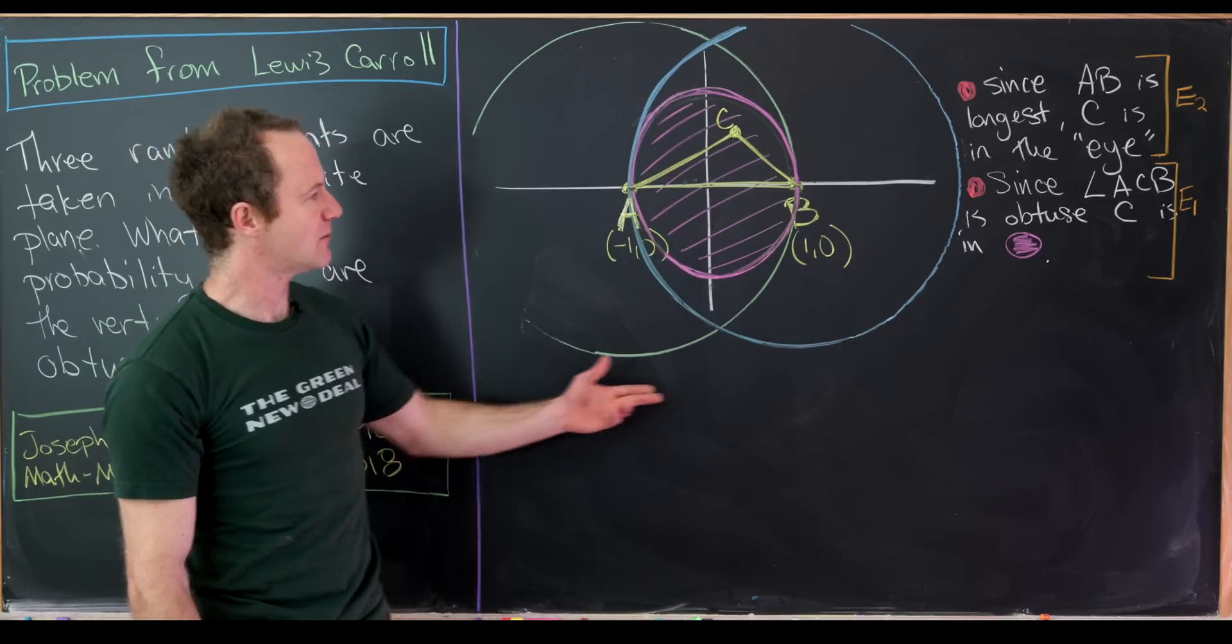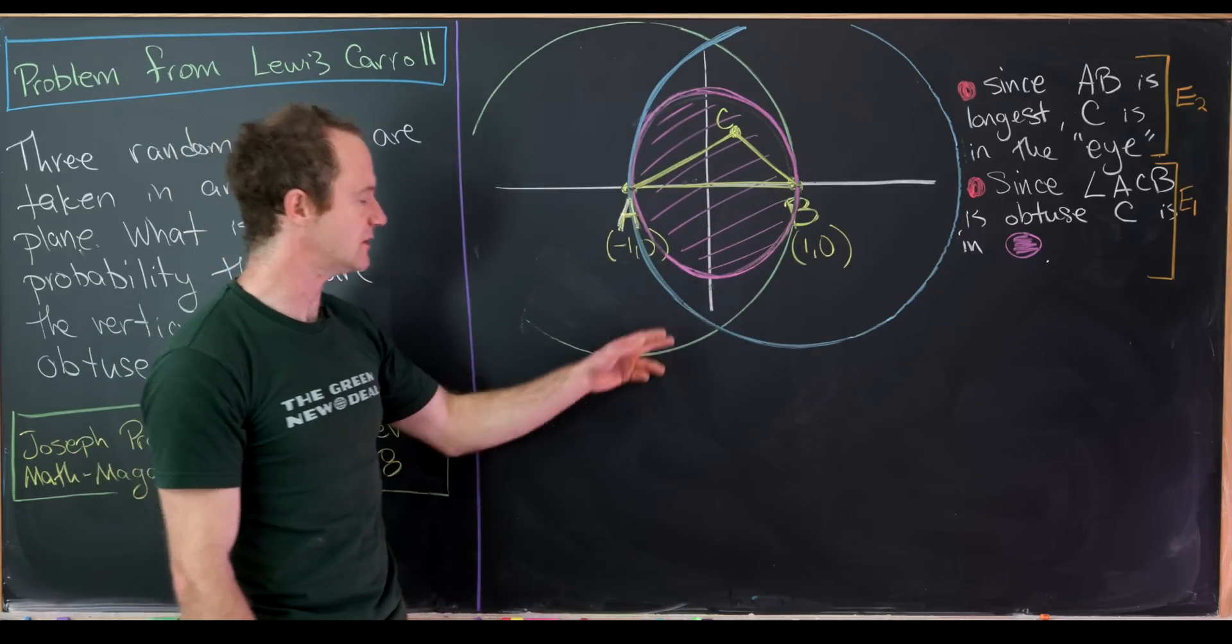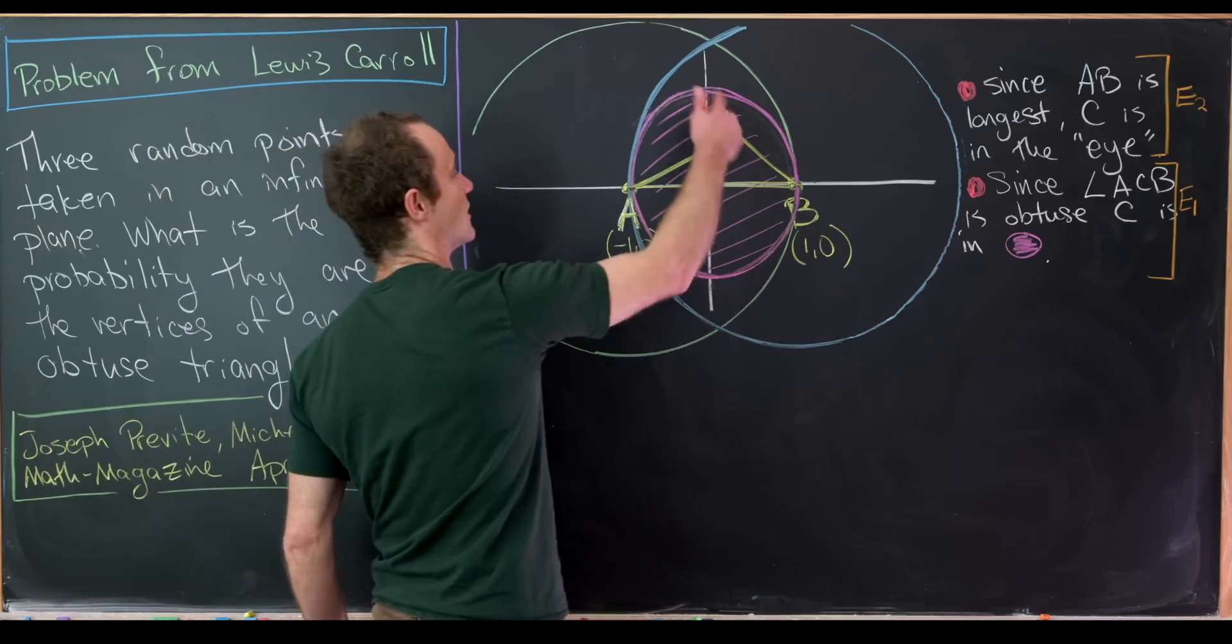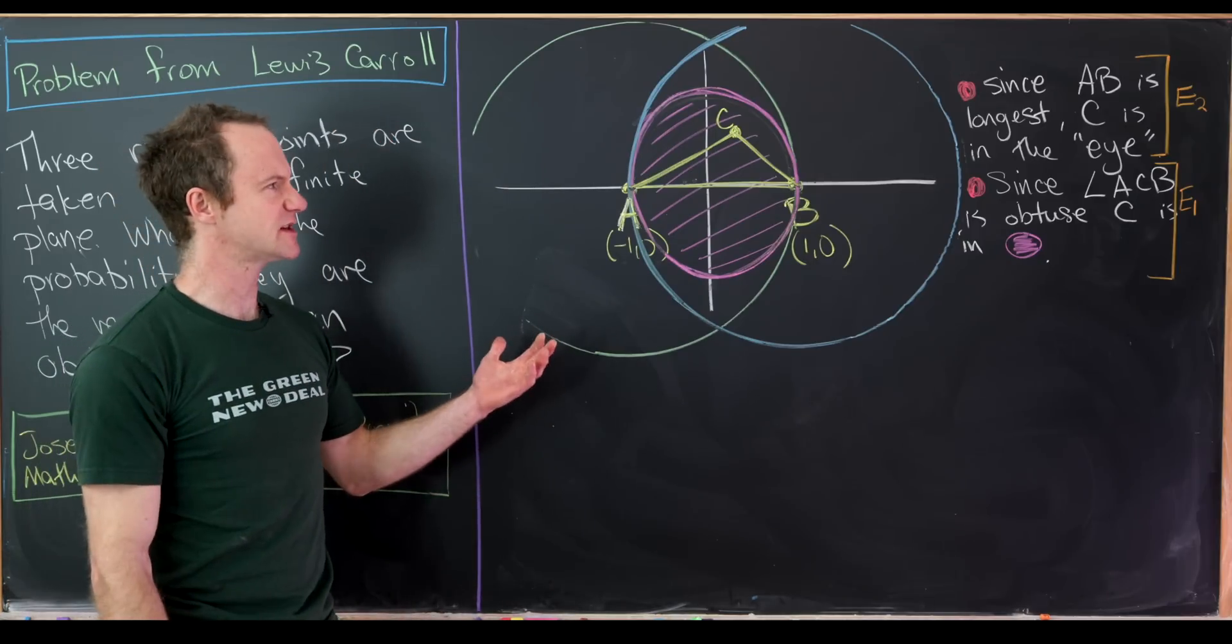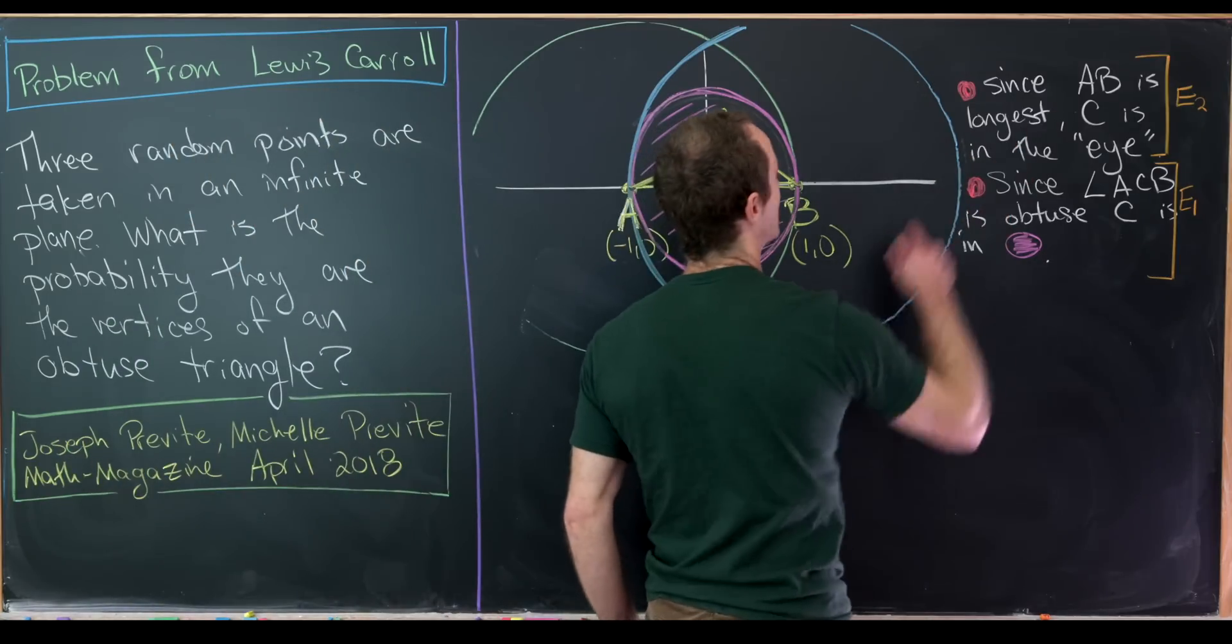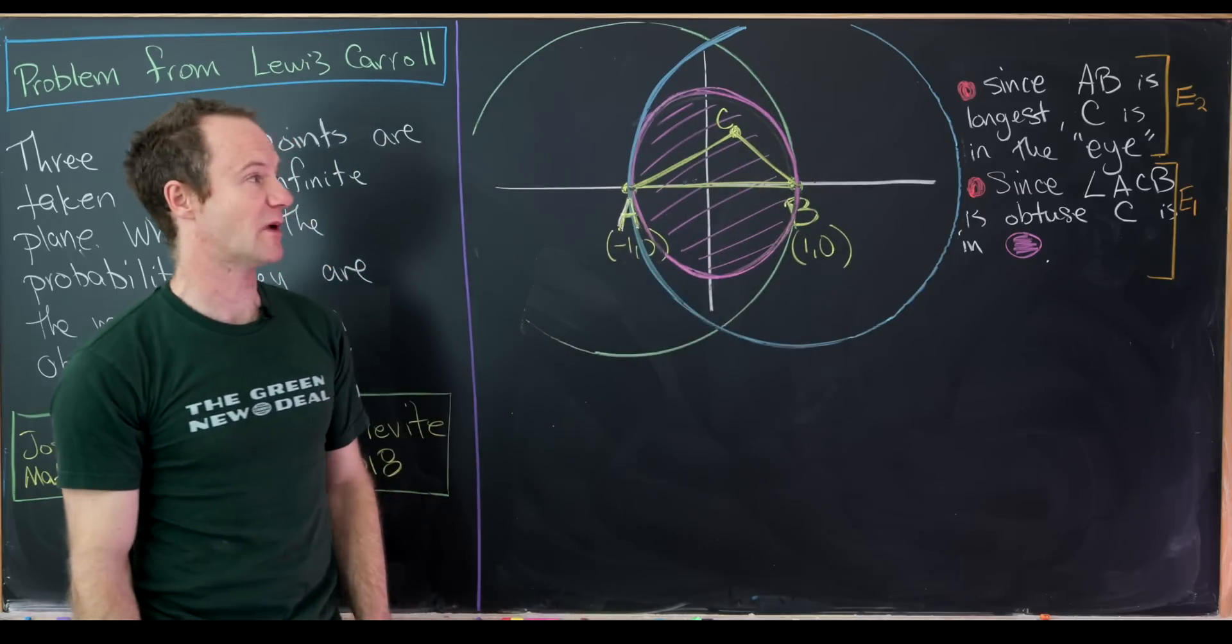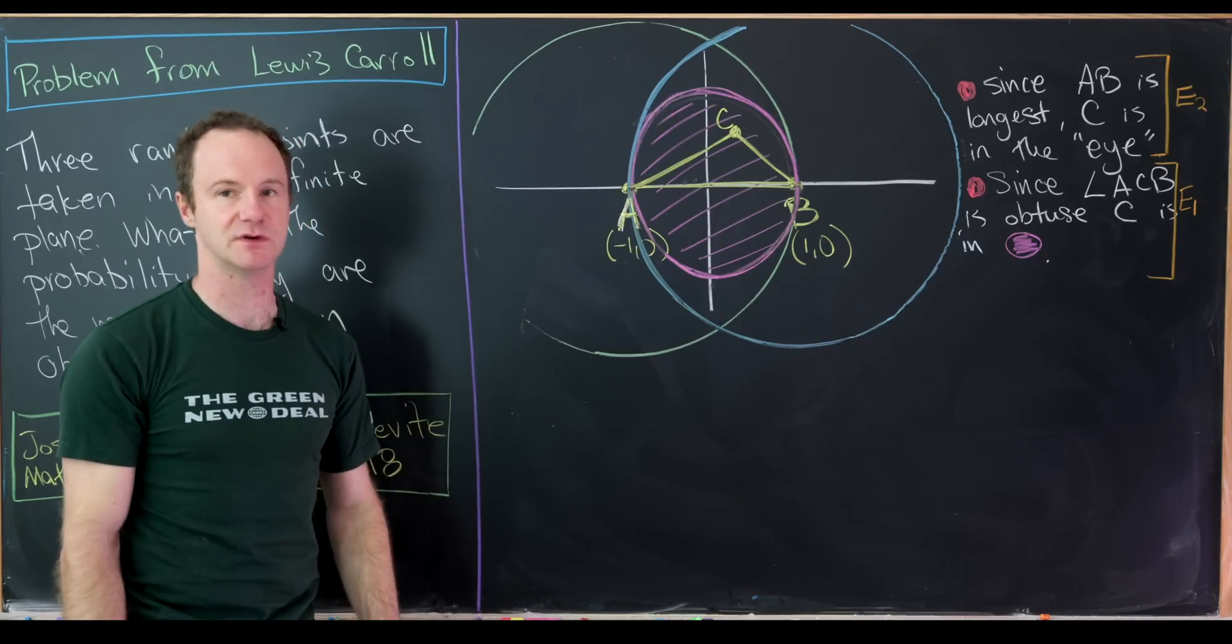Then I put my circles. So this green circle is centered at A with radius 2, and the blue one is centered at B with radius 2. And then my inner magenta colored circle. Now let's notice that since we're assuming AB is the longest side of our triangle, we know that C has to be in this I formed by the intersection of those two green and blue circles.